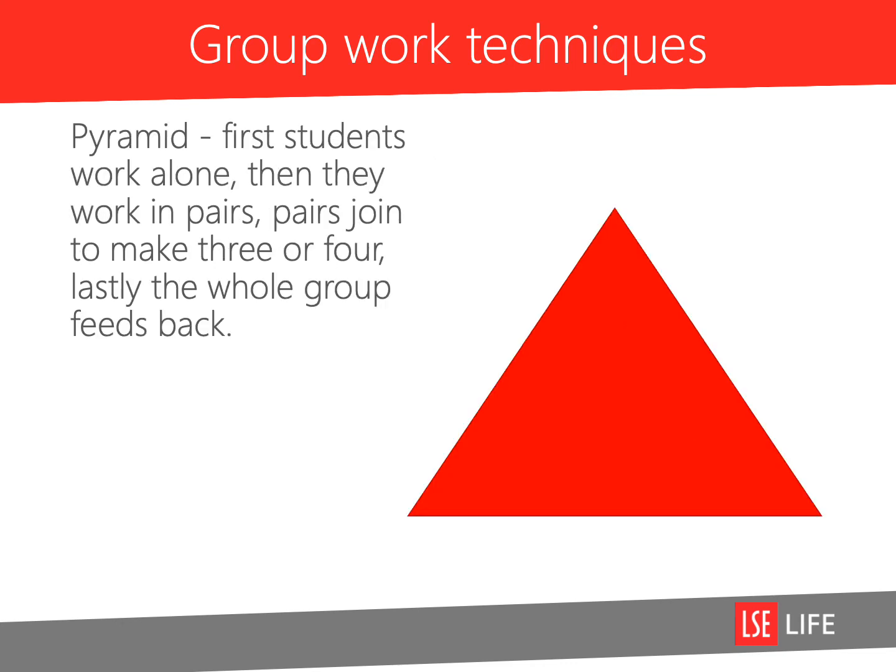Pyramid: first students work alone, then they work in pairs. Pairs join to make three or four. Lastly, the whole group feeds back. This is a really helpful technique if you have a group with a lot of quiet people. Allowing them the chance first to think about something on their own and then gradually increasing the number of people they talk to helps them to slowly warm up.